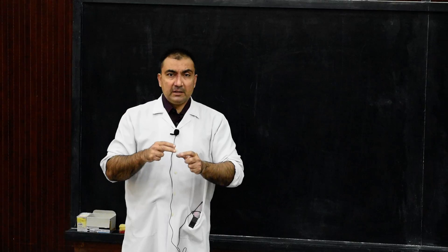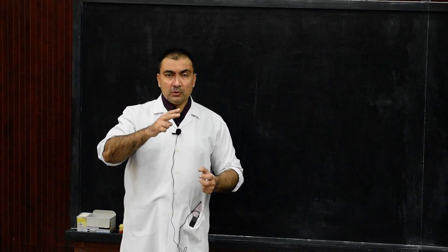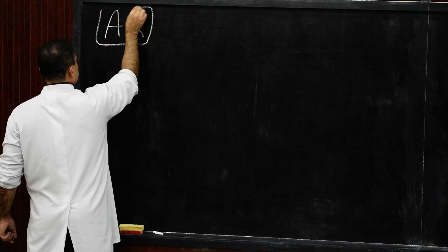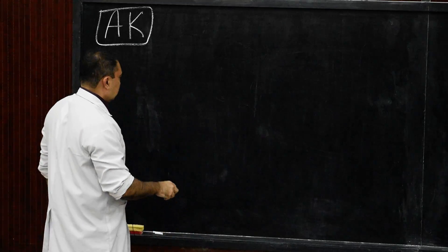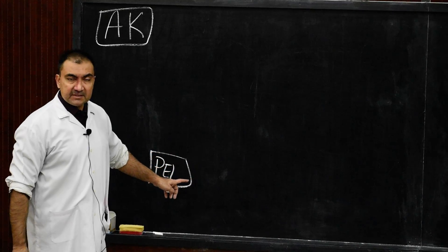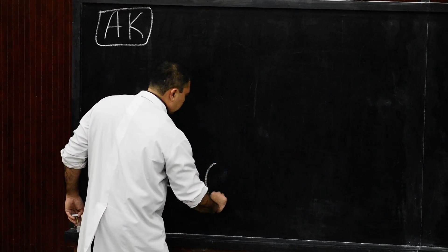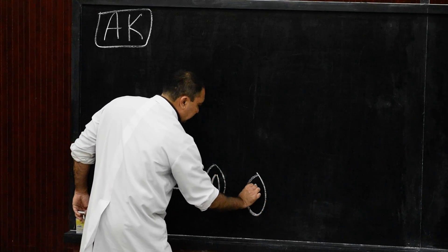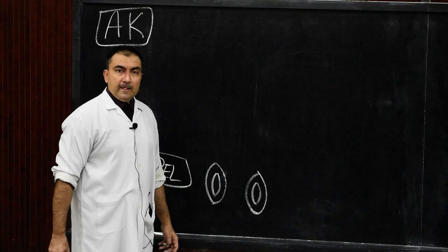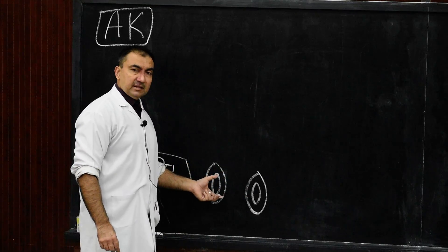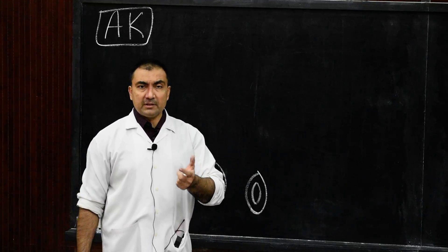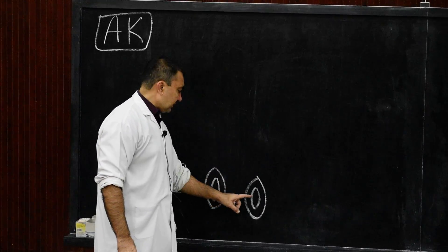After the metanephric kidney has developed — its collecting part and its excretory part — there will be two phenomena which will take place: the ascent of the kidney as well as rotation of the kidney. In the ascent of the kidney, we draw a flow chart showing that the kidneys, first of all, are within the pelvic cavity. Initially, the kidneys have their hilum directed anteriorly — the right and left kidneys present in the pelvic cavity.